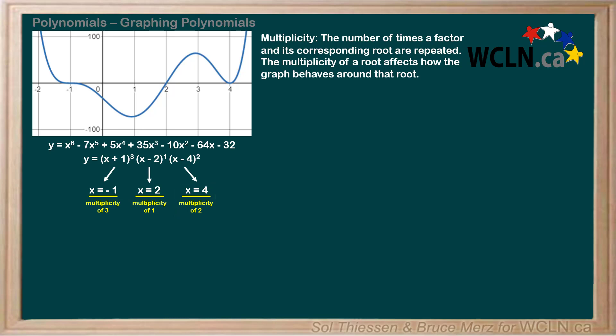These observations generalize. At roots of odd multiplicities, the plot will cross over the x-axis. At roots of even multiplicities, the plot will bounce off the x-axis, becoming tangent to the axis but never crossing over.